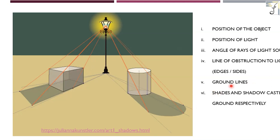Ground lines are understood through the position of the lights. From the ground plane there should be a connection — for instance, from a suspended bulb you identify the connection to the ground line. From the ground position of the light towards the ground position of the object, that connection is the ground line. This ground line defines the optimum outline of the shadow.